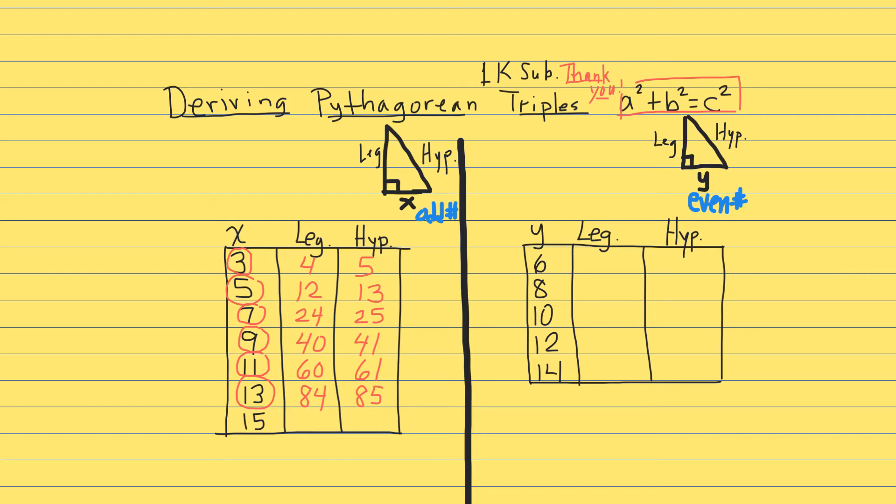And if we add 1, that's 85. Of course, 84 plus 85 is 169. The last example that we're going to do here before we can come up with the formula is going to be 15. 15 squared is 225. Minus 1 is 224, and half of that would be 112. And if we add 1 to that, it's 113. So 15 squared plus 112 squared is equal to 113 squared.